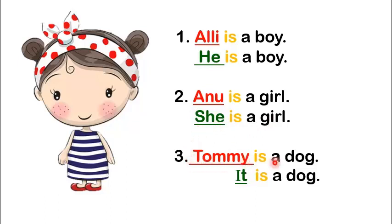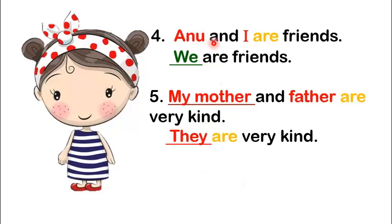Tommy is a dog. It is a dog. It is a pronoun. Anu and I are friends. We can also say, we are friends. We is a pronoun. My mother and father are very kind. We can also say, they are very kind. They is a pronoun.